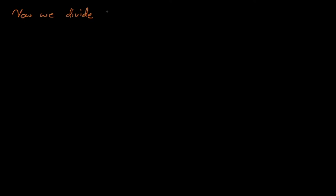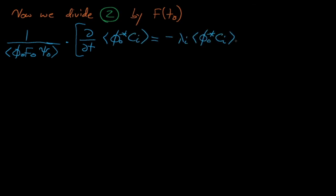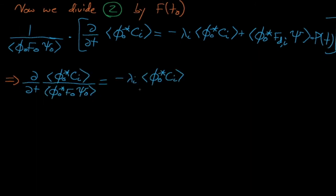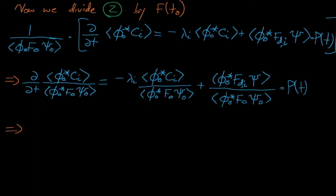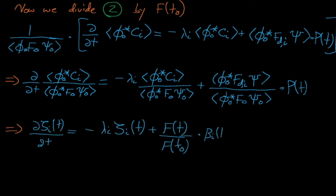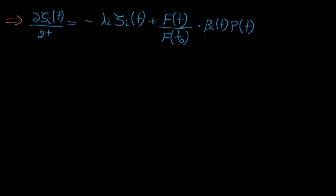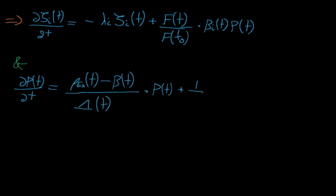Lastly, we will take our number 2 adjoint weighted delayed neutron precursor balance equation and divide it by the inner product of phi star naught f naught psi naught. From here, with a little finagling for the beta effective term, we can see that the time derivative of squiggle i is equal to negative lambda squiggle i plus f of t divided by f of t naught times beta effective times the power. Together with our final form of equation 1, we have arrived at the exact point reactor kinetics equations.